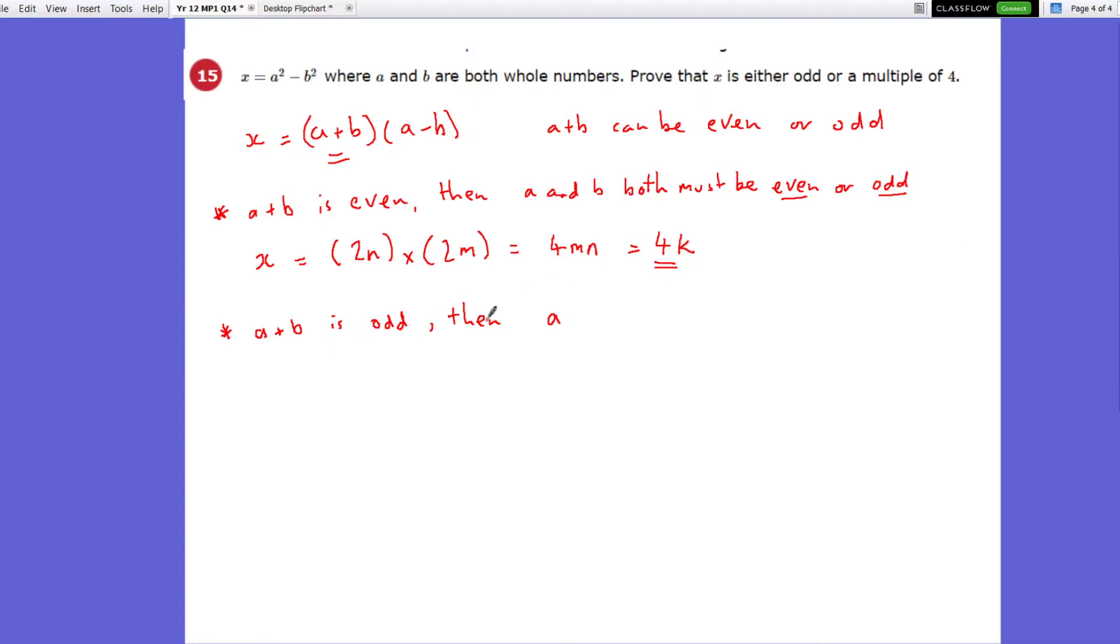So if this is odd, then a must be odd and b must be even, or a must be even and b must be odd.